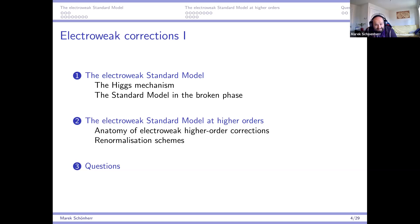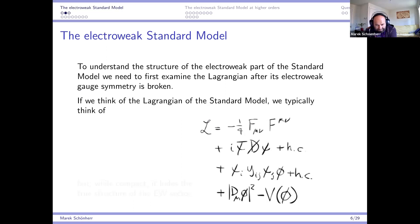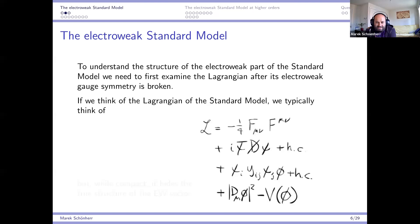Let's get started. For the first part today we look into the electroweak part of the Standard Model — not in too much detail, since I suspect this won't be news to most of you. However, it's useful to point out a few things along the way: where parameters, fields, and relations come from, and what kind of impact this will have on the structure of higher-order corrections.